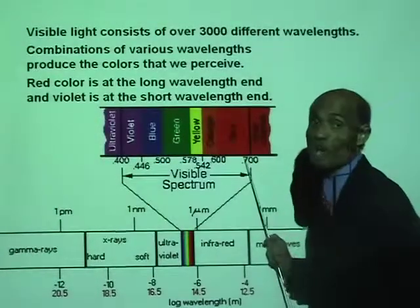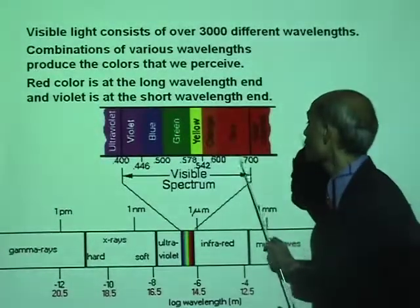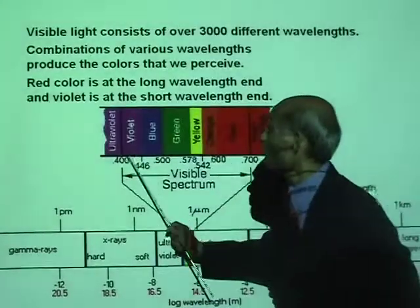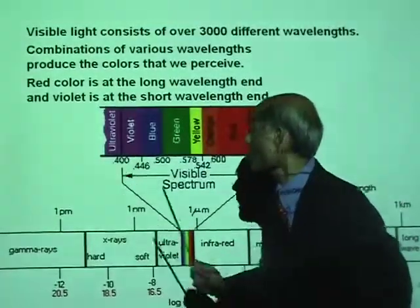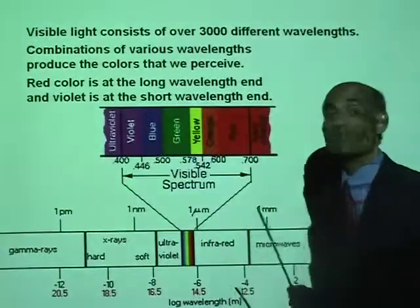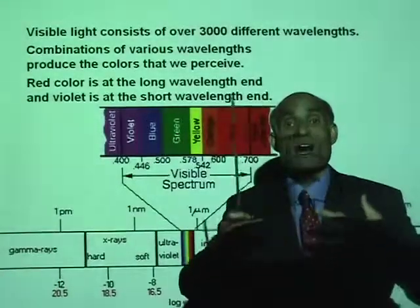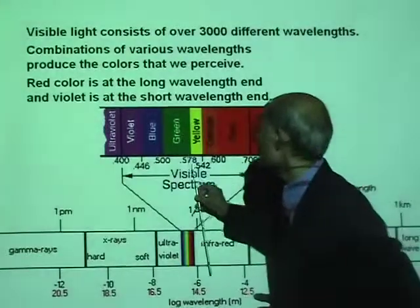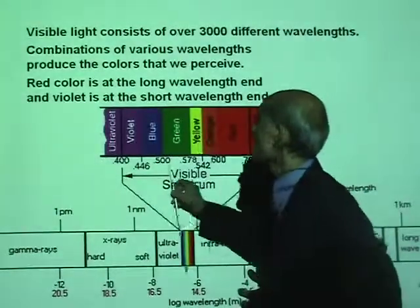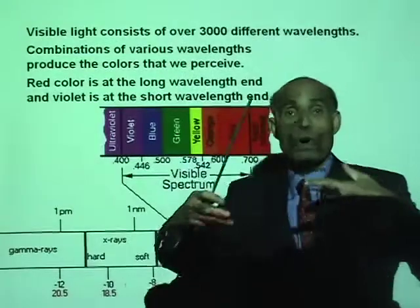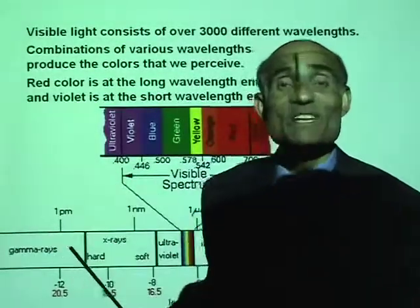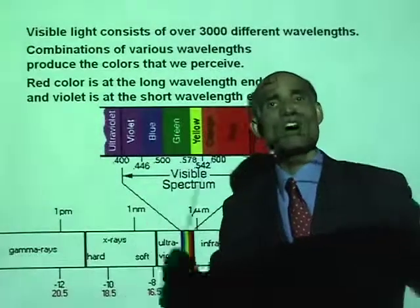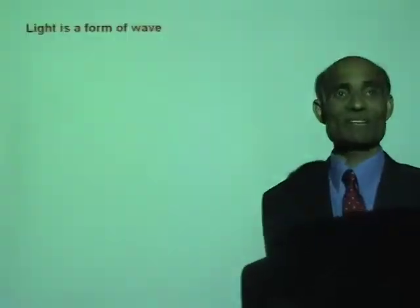That means there are about 3,000 different wavelengths between red and violet, and all the colors that we see are actually combinations of these 3,000 different wavelengths.